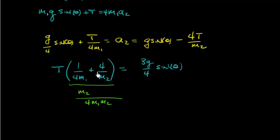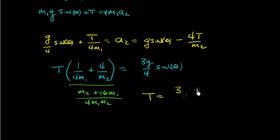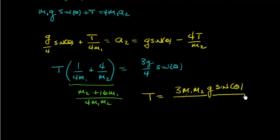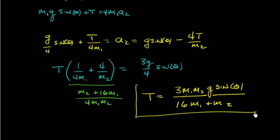With the common denominator 4m1·m2, the numerator on the left becomes m2 + 16m1. Solving for tension, the 4's cancel, and we get T = 3·m1·m2·g·sinθ / (16m1 + m2). That's the answer.